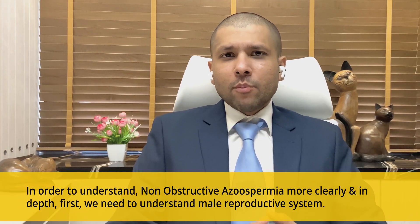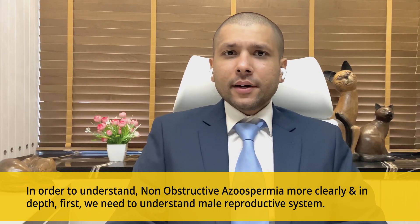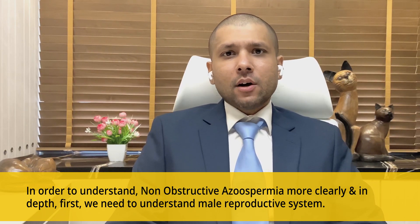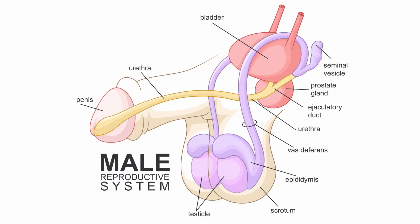In order to understand non-obstructive azoospermia more clearly, we need to understand the basics of the reproductive anatomy of the male. As we all know, males have two testes, the right one and the left one. The testes is connected through a pipeline called the vas deferens, where the produced sperms — the testes being the manufacturing unit producing the sperms — are stored and carried to the seminal vesicles.